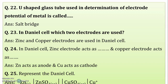In the Daniel cell, which two electrodes are present? The Daniel cell consists of two electrodes: zinc and copper. In the electrochemical series, zinc is present at the top, so it acts as the anode, while copper acts as the cathode.